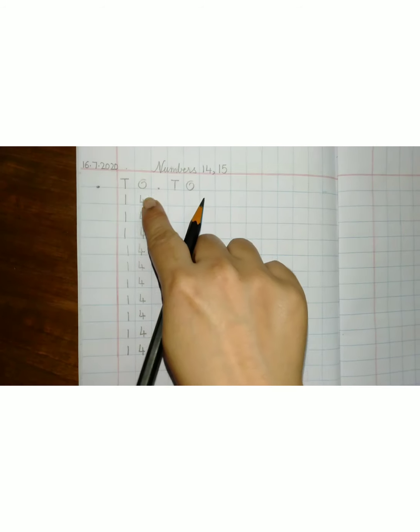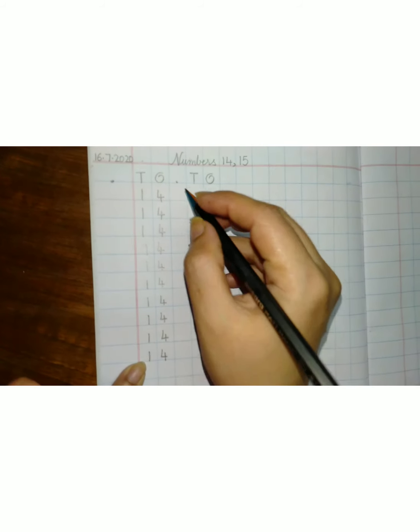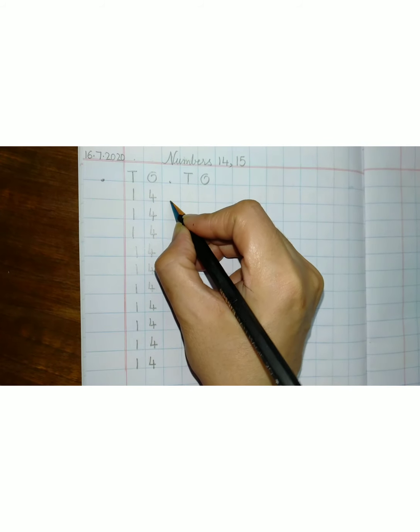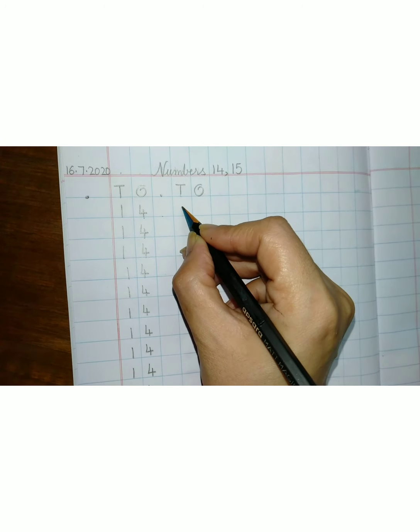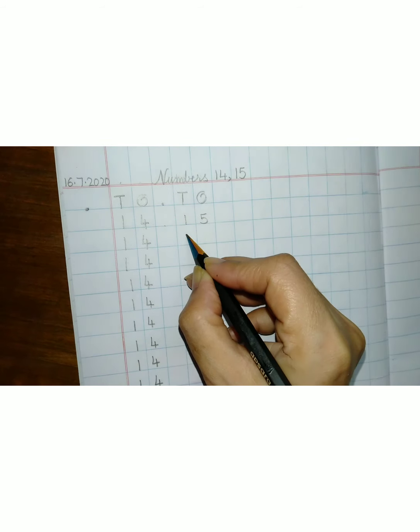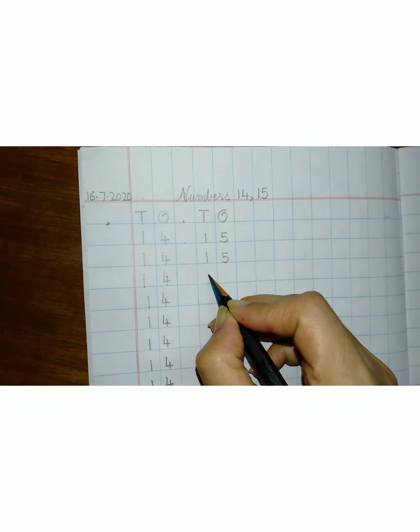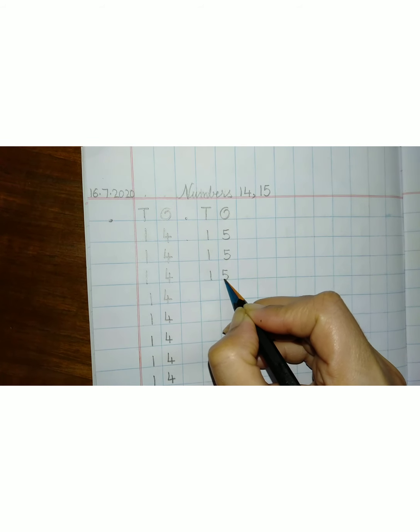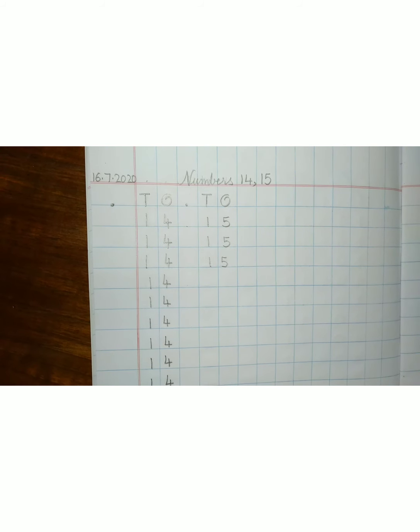Alright children. You have done your writing of fourteen number. Now leave this square. Come to the second T O and start writing. One ten, five extra. Fifteen. One ten, five extra. Fifteen. Quickly finish your work and send me your photos. All the best.